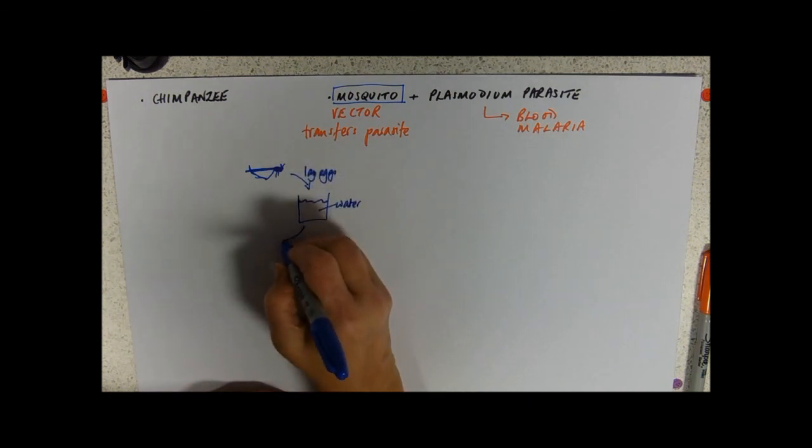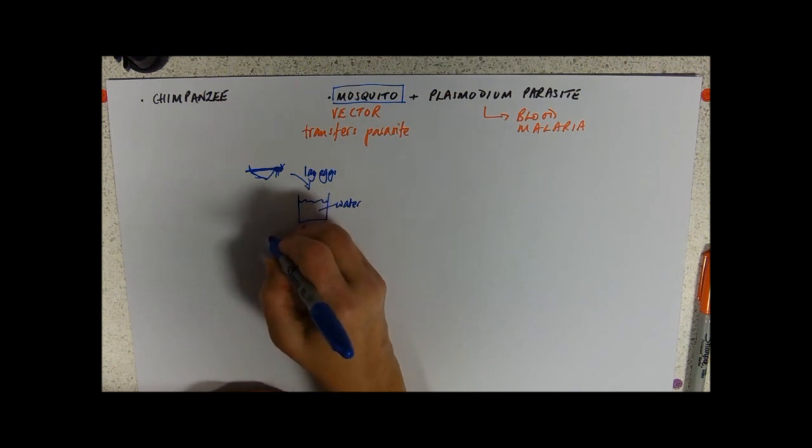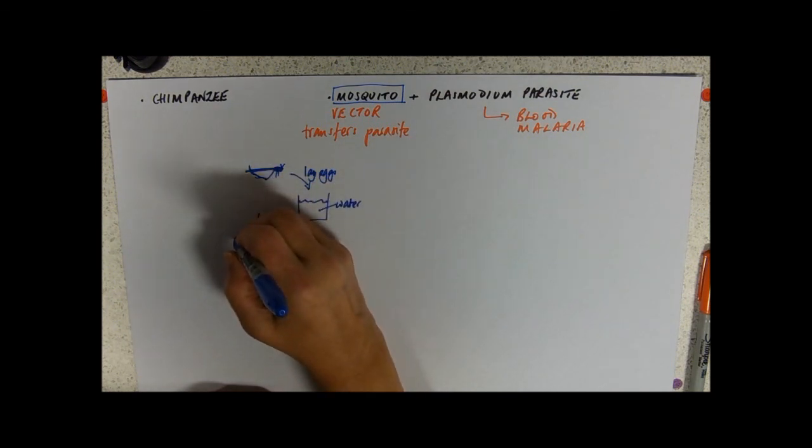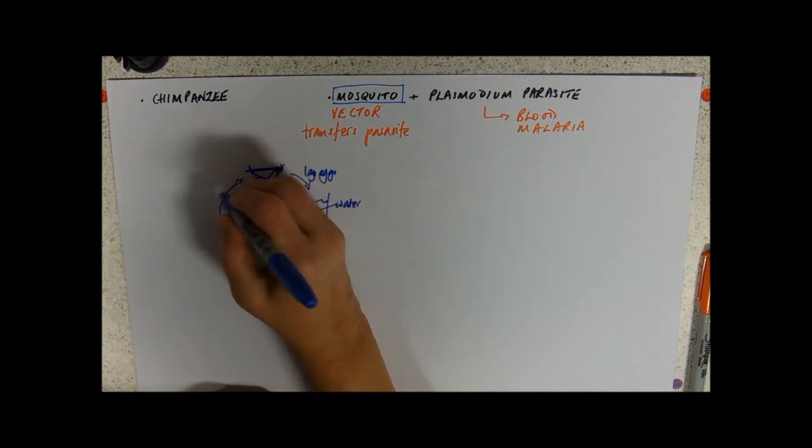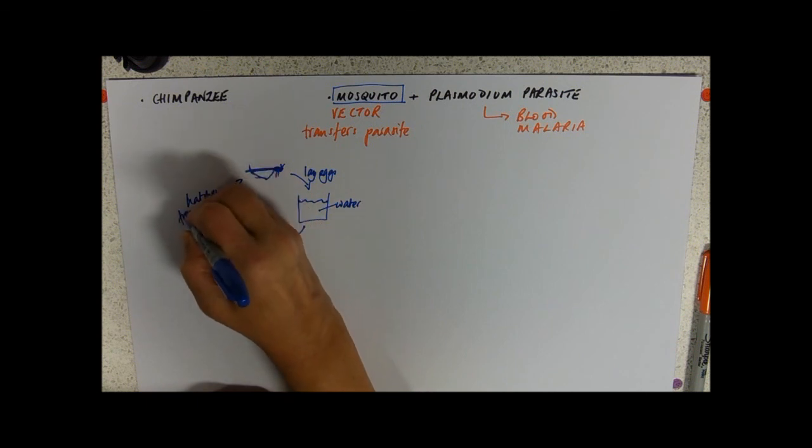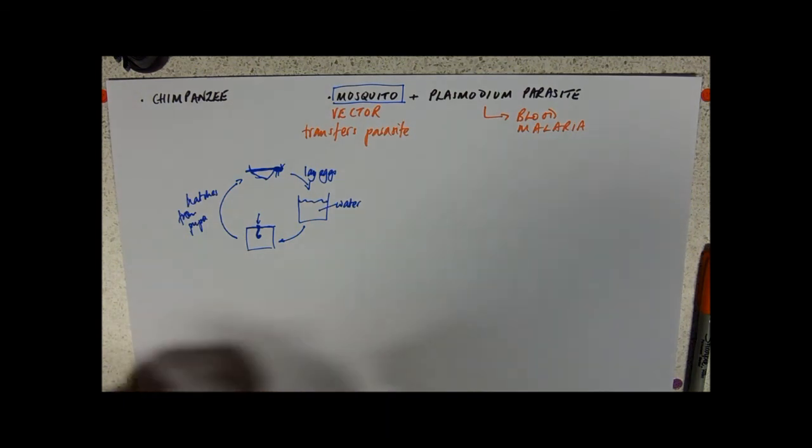When the eggs hatch, they turn into a larva, which hangs around on the top of the water and gains its oxygen through its breathing tubes and then it sort of pupates and hatches. So we can exploit its life cycle in various ways.